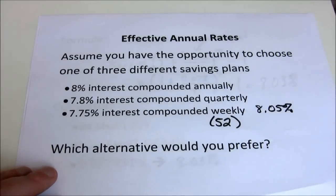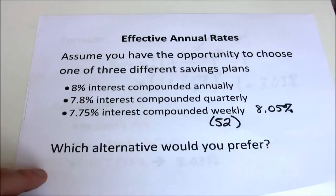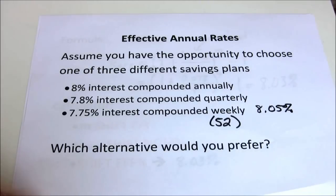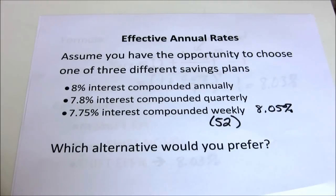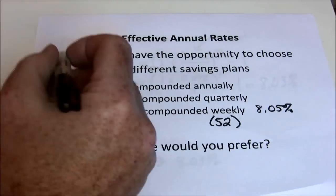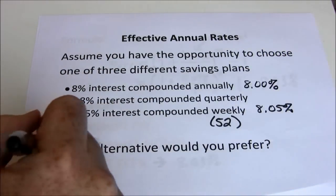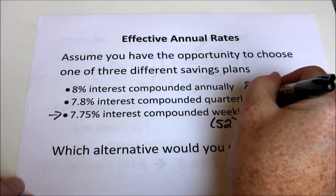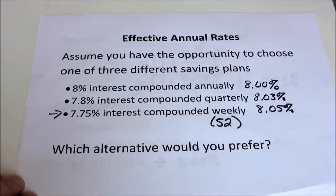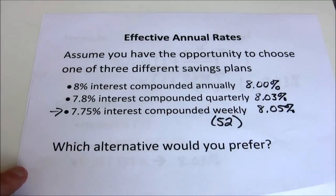A lot of times people try to plug in 48 for weekly because they think there are 4 weeks in a month and 12 months in a year, giving 48 weeks. But remember, February is the only month with 28 days — every other month has an extra 2 or 3 days. So we actually end up with 52 weeks in a year. Always use 52 when doing weekly compounding. To summarize: 8% compounded annually is 8%, 7.8% compounded quarterly is 8.03%, and 7.75% compounded weekly is 8.05% — that's our best option, even if the difference isn't huge.